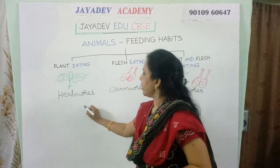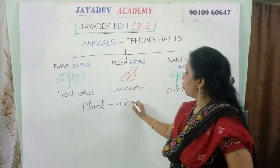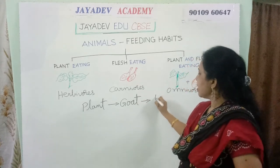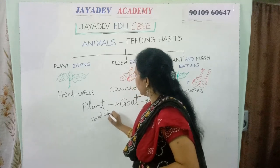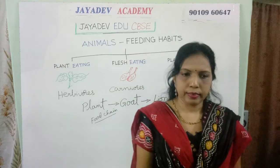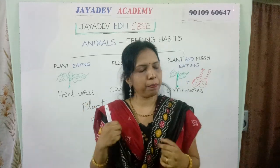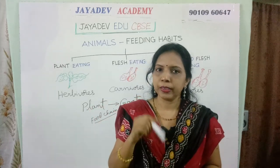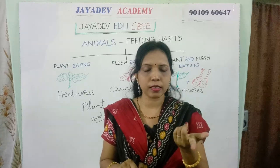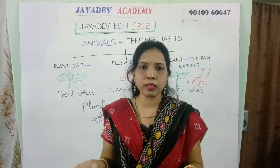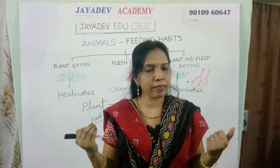In this food chain, what is happening? The plant is eaten by the goat, and the goat is eaten by the lion. So this is a food chain — it goes on. In this food chain, plants are the only living things that produce their own food. How? With the help of energy from the sun. Plants prepare their food using sunlight, and we and animals eat that food.